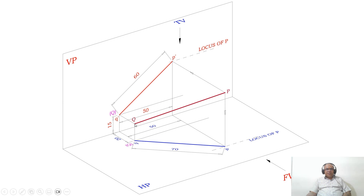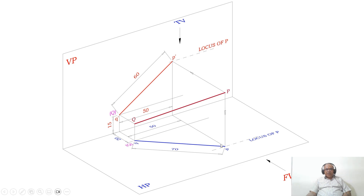The next thing to do is find the distance between the end projectors. The distance between the end projectors is given in both the front view and the top view. When you look from the front view, the distance between Q dash and Q will be 50 mm with respect to this vertical line, and you draw one more vertical line here. Similarly, with respect to the top view also, from this side, you measure 50 mm and draw a vertical line here.